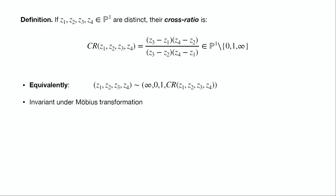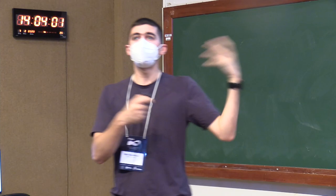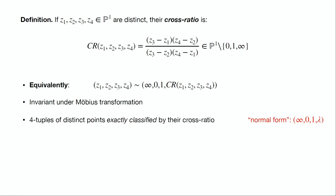The cross-ratio takes in four points and outputs a point of P1 not equal to zero, one, or infinity. You take your first three points z1, z2, z3, use the unique Möbius transformation that sends them to infinity, zero, and one in order, and see where the fourth point goes. The cross-ratio is an invariant under Möbius transformations. All we've done is put each four-tuple in normal form — using an automorphism to put it in the form infinity, zero, one, lambda — and we could do that uniquely.